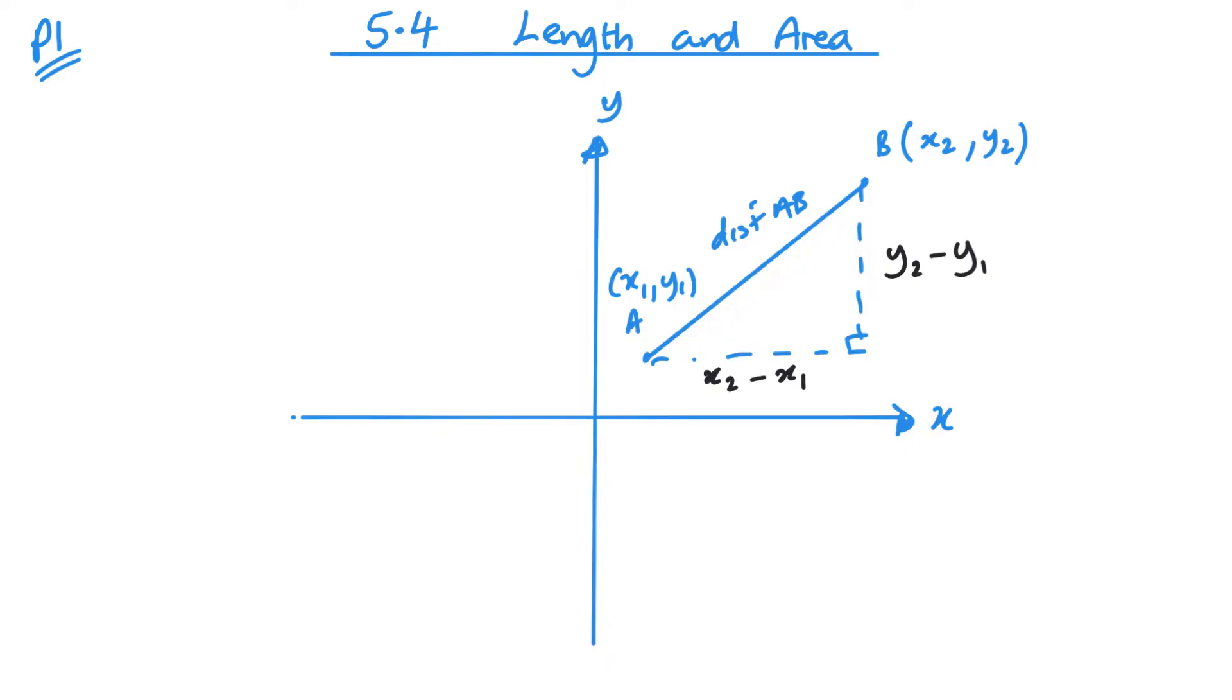Now Pythagoras says that c squared is equal to a squared plus b squared or c would be equal to the square root of a squared plus b squared. And that's what we're going to apply here. So this distance A, B, this is going to be equal to the square root of x2 minus x1 squared plus y2 minus y1 squared. And all that is square root.